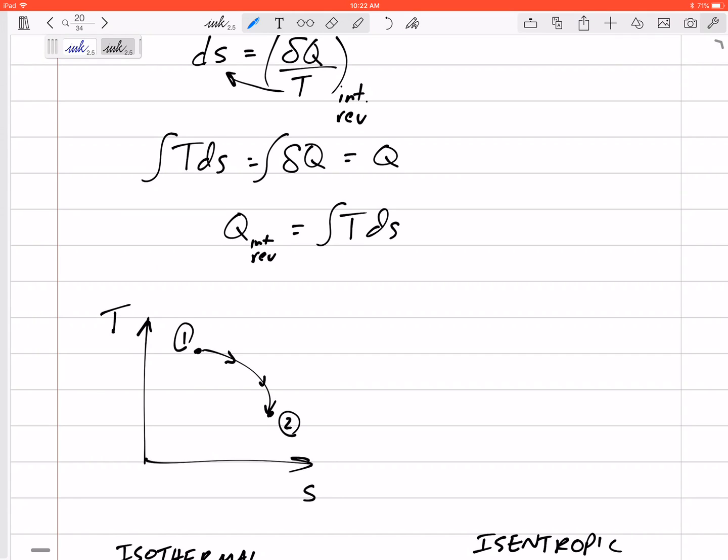Q of an internally reversible process is the integral of TDS. So the heat transfer is the integral of TDS. So if we're looking at a TS diagram, Q is the integral of TDS. So Q would be this area under the curve.